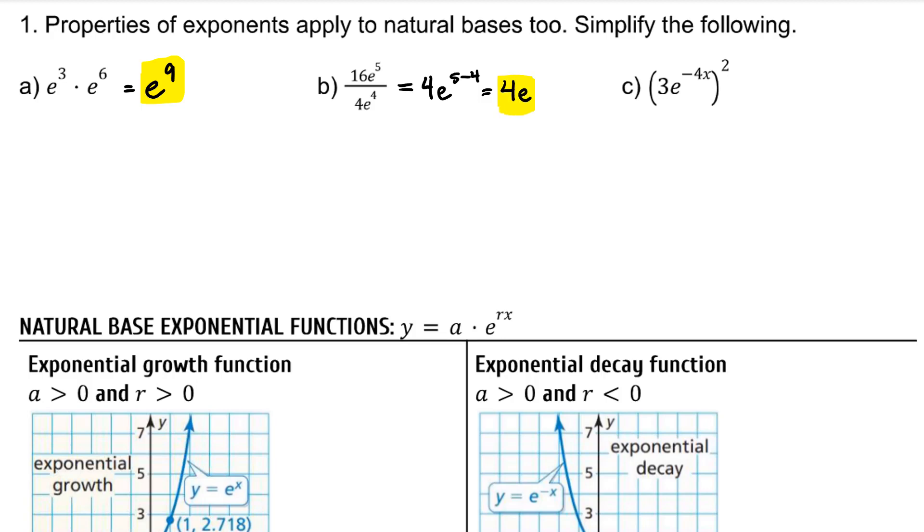A product to a power means we apply this power to everything inside the product. 3 squared is 9. And when we have a power to a power, we multiply. And fully simplified, we'd write with a positive exponent. So 9 over e to the 8x.